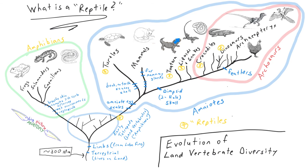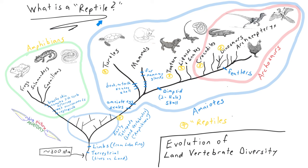So the question of what a reptile is — well, we have an idea of a scaly land vertebrate, but it's really evolutionarily hard to define unless we include birds and ally the turtles with the rest, or exclude mammals. That's how this question of what a reptile is can really help us grasp the evolution of land vertebrate diversity.